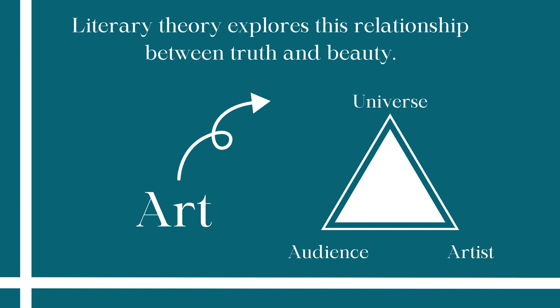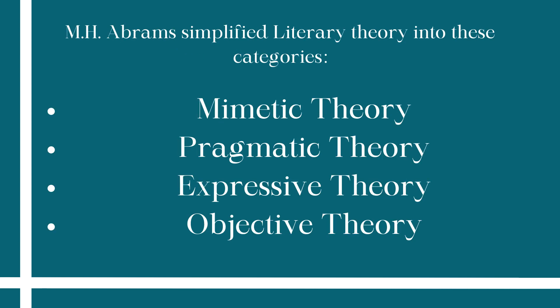Literary theory basically explores this beautiful relationship between art across three facets. There is a larger universe that is outside of us, then there is an artist who wants to encapsulate or capture that universe in the form of art, and there is an audience — so the artwork also has to interact with an audience. We then move on to understanding this relationship between universe, audience, and artist in relation to art through the four theories given by M.H. Abrams, who simplified literary theory into four categories: mimetic theory, pragmatic theory, expressive theory, and objective theory.